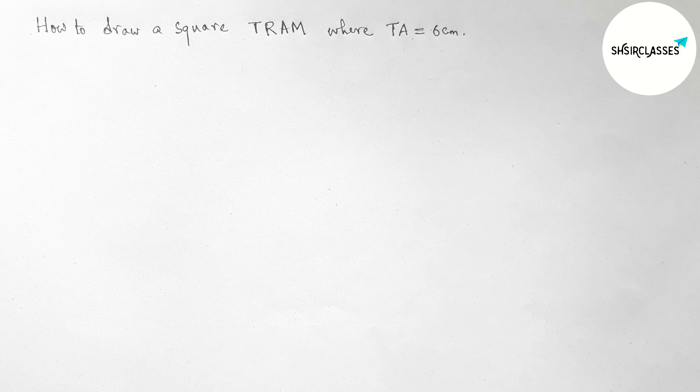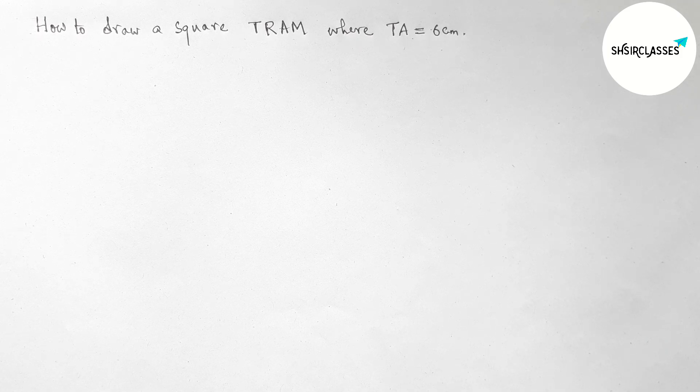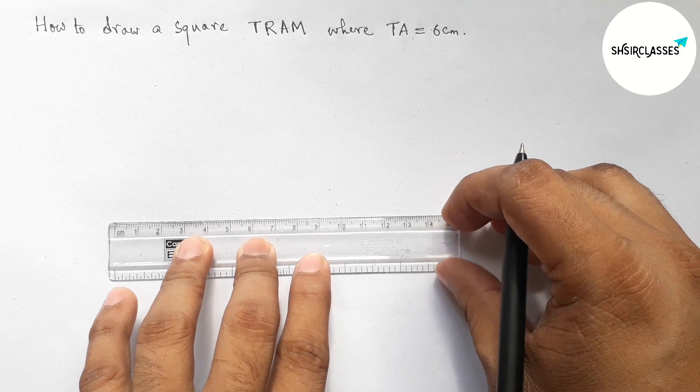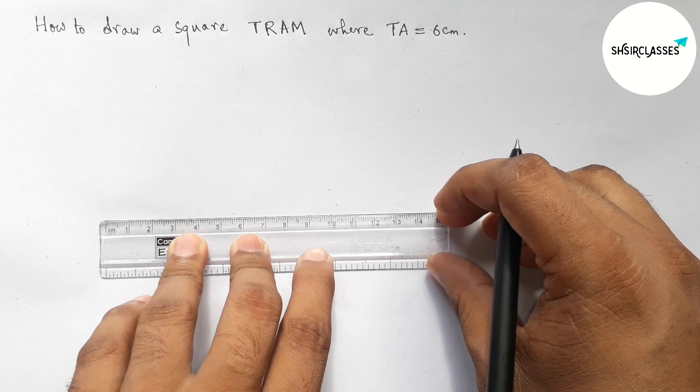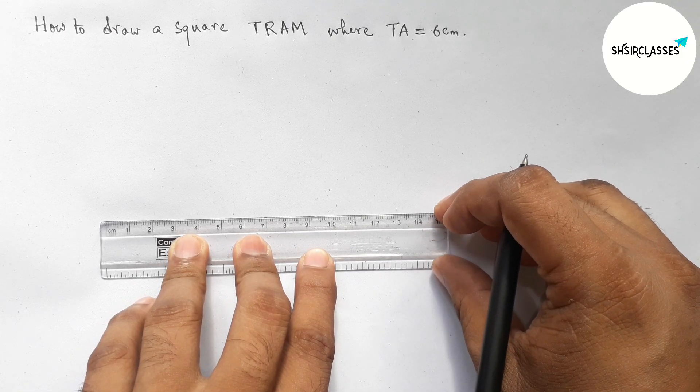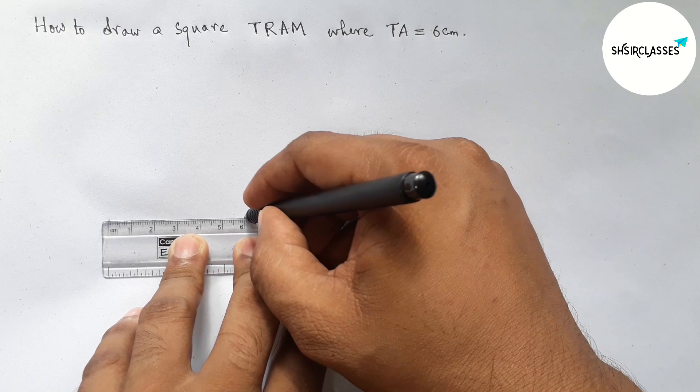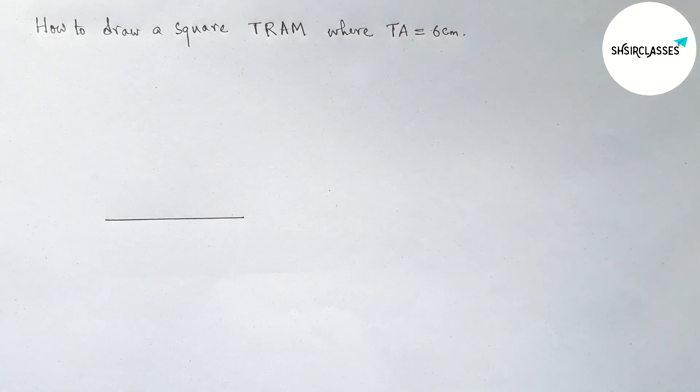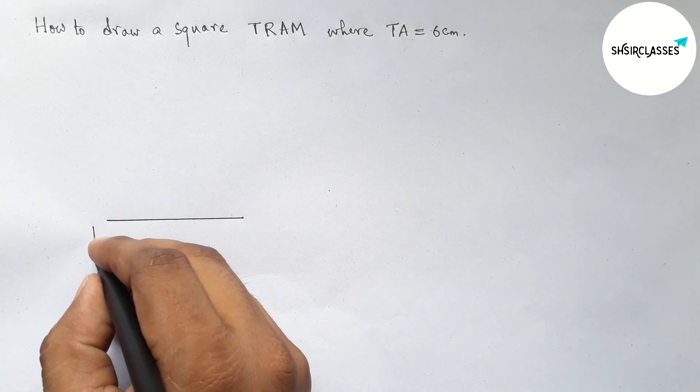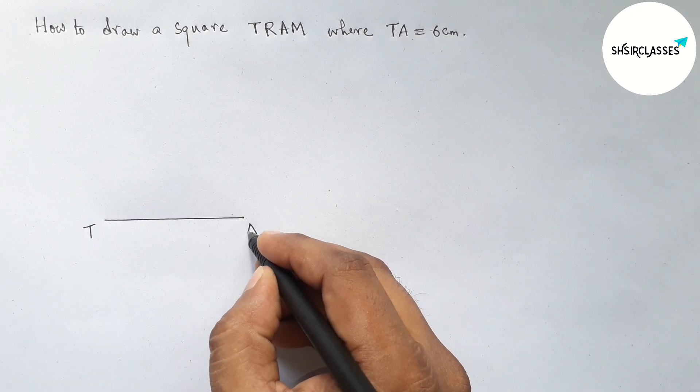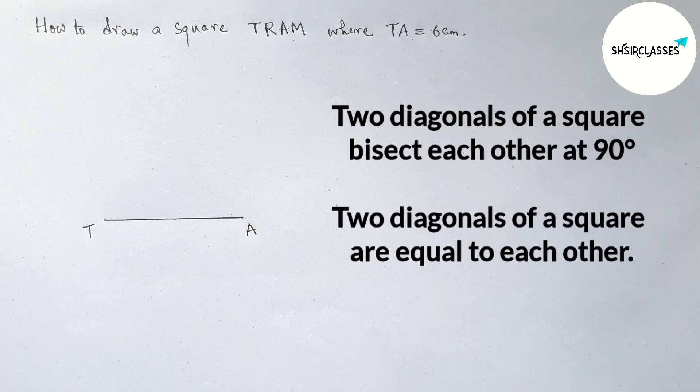First of all, here given TA equal to 6 centimeters, so drawing here TA equal to 6 centimeters with the help of a scale. So this is a 6 centimeter line segment. Now labeling here T and here A.